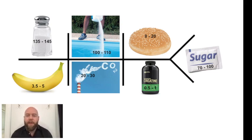To the top right is chloride, represented by the picture of a man dumping chlorine into the pool. That's an easy one, it's just 100 to 110. Below that is CO2, or bicarb, and the normal value is 20 to 30.